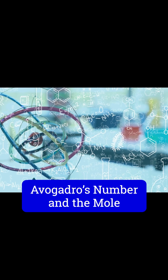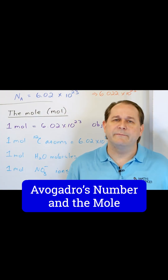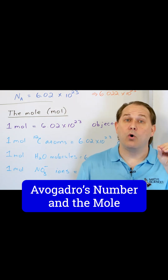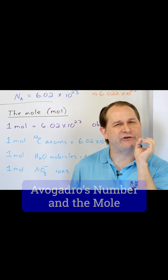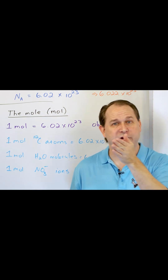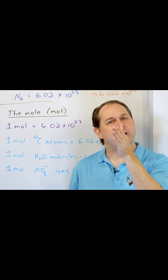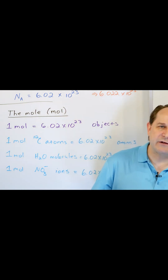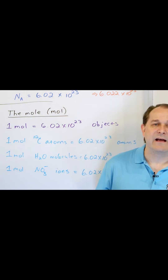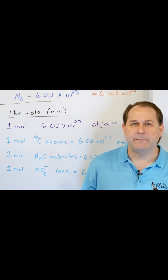So we've talked about Avogadro's number — it's just the number 6.02 times 10 to the 23rd. One mole of an object is that many fundamental objects. If you're talking about atoms, it's that many atoms. If you're talking about molecules, it's that many molecules. If you're talking about ions, it's that many ions. It's the same concept no matter what you're talking about.